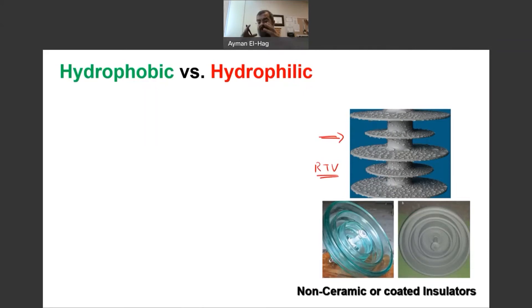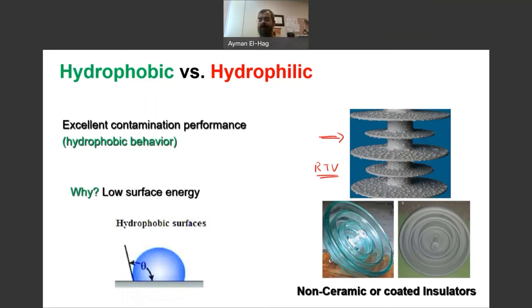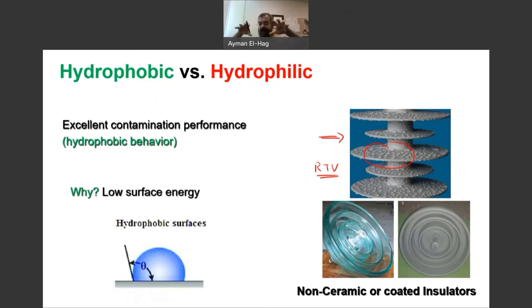So when we have this material, as you can see here, the water droplets don't come in contact with each other. This is what we call hydrophobic behavior. This material has a hydrophobic behavior, which is the opposite of ceramic insulators — the surface energy is very, very low. So if a water droplet comes onto the surface, it results in a very high contact angle, giving you discrete water droplets that are not connected with each other. There is no wetting layer, so there is no path for the leakage current.